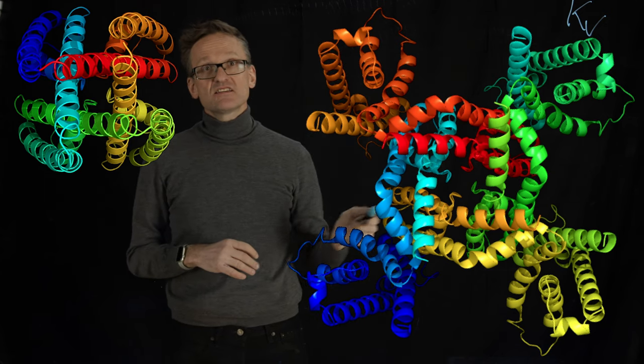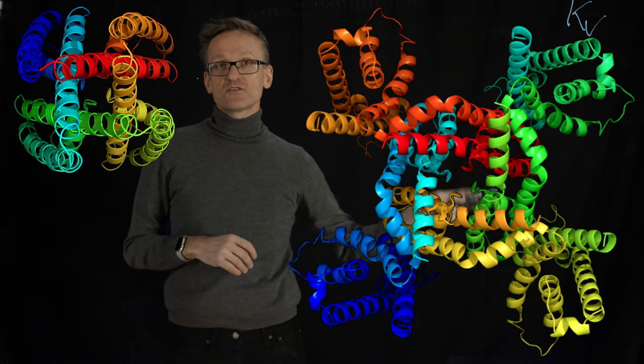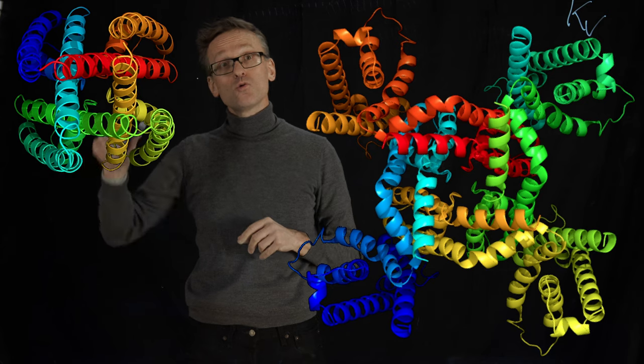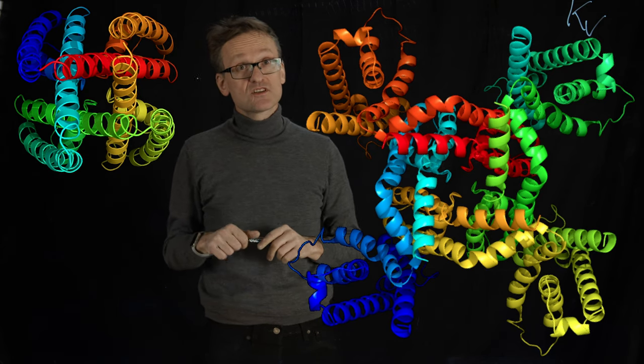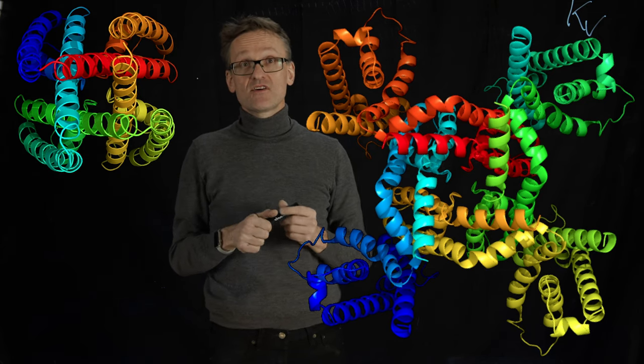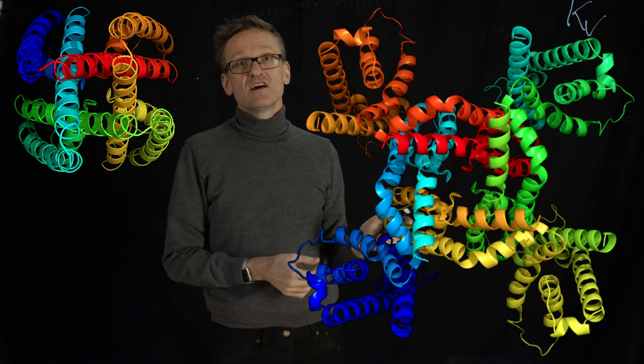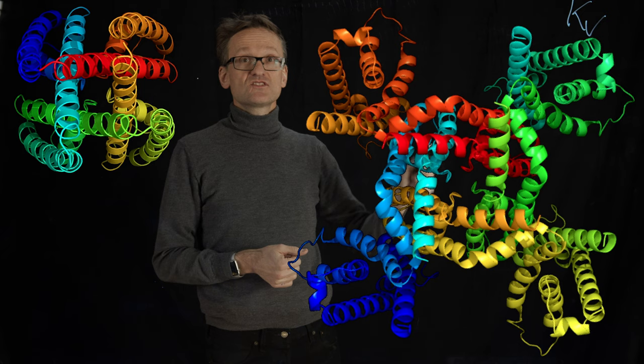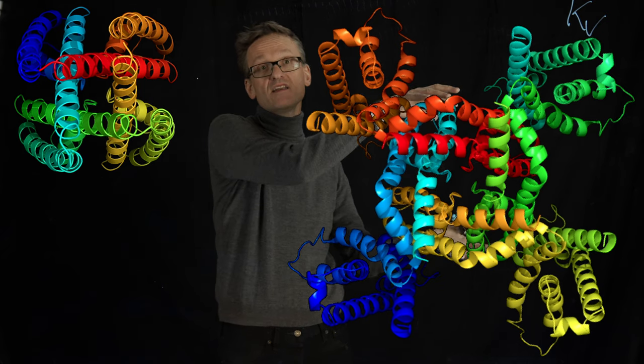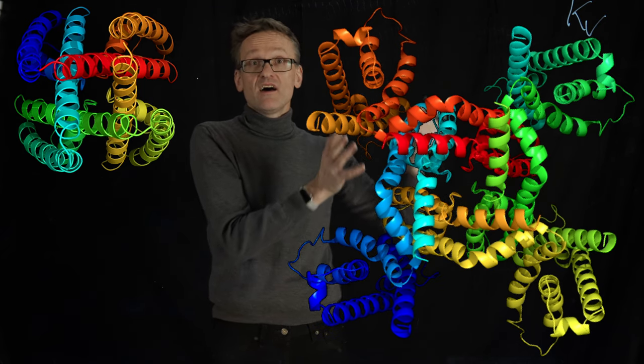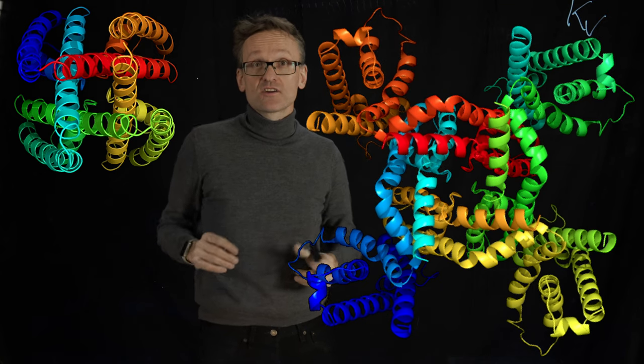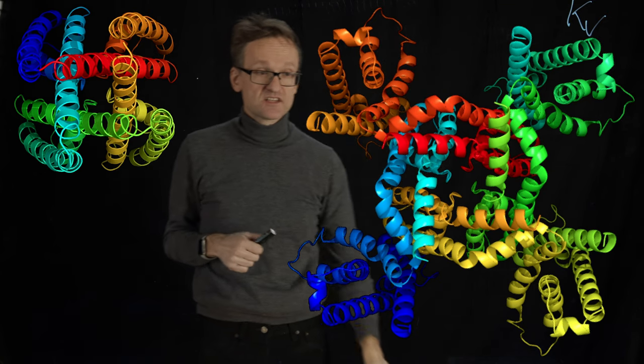You might be able to see the similarity between the central part of the KV channel here and the whole KCSA channel. That's not a coincidence. This too is a tetramer. The entire orange part here is connected to the red part here, and then these four parts are stitched together so that they form, on the one hand, a central ion-conducting pore here, and then these extra components that are going to be responsible for the voltage sensitivity.